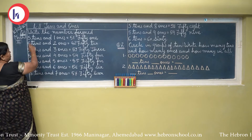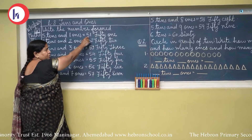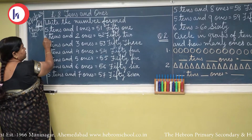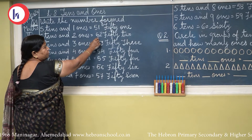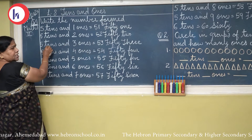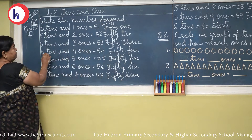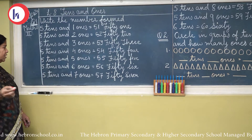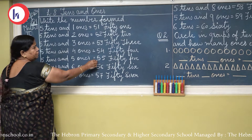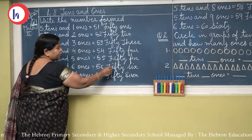How many 10s are there? 1, 2, 3, 4, 5, 6, 7, 8, 9. 9 tens means 90. Now 9 tens and 1 — 91. 9 tens and 2 — 92. 9 tens and 3 — 93. 9 tens and 4 — 94. 9 tens and 5 — 95. 9 tens and 6 — 96. 9 tens and 7 — 97. 9 tens and 8 — 98. 9 tens and 9 — 99. And 9 tens and 1 more 10 — which number will form? Yes, 100.